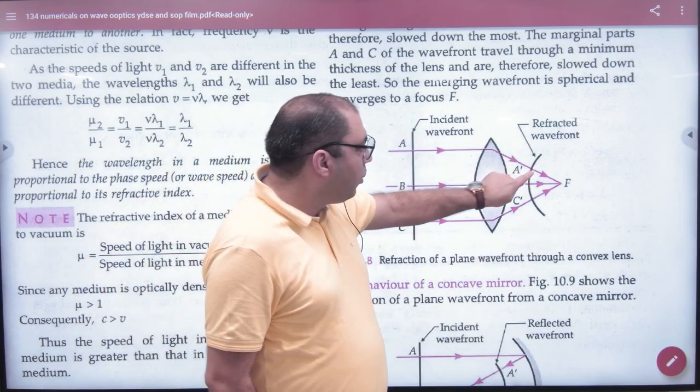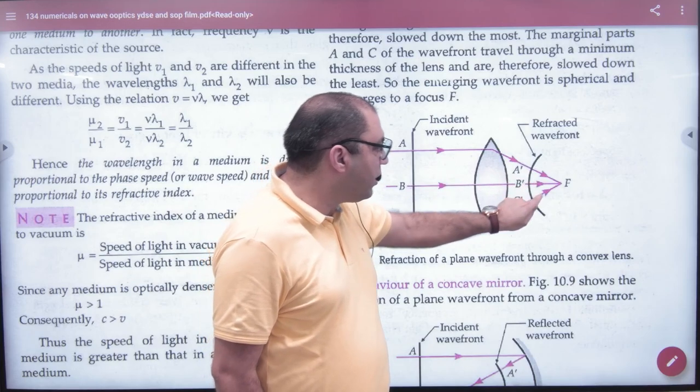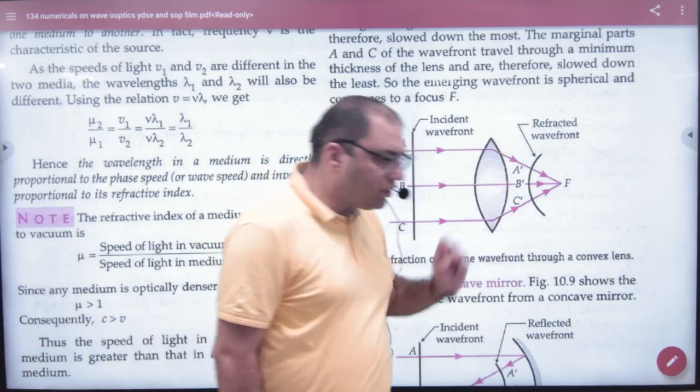Why? Because the ray and the wavefront angle is 90 degrees. That's why the wavefront will become the wavefront. This is the wavefront.